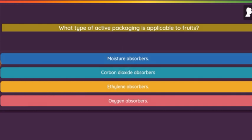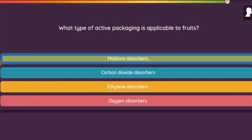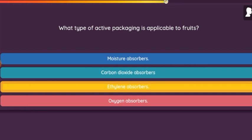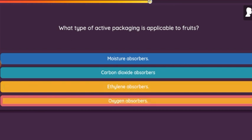Question: What type of active packaging is applicable to fruits? Option 1: Moisture absorbers. Option 2: Carbon dioxide absorbers. Option 3: Ethylene absorbers. Option 4: Oxygen absorbers.